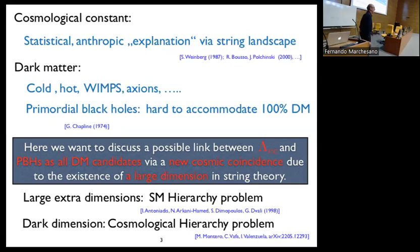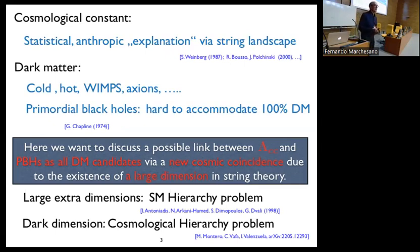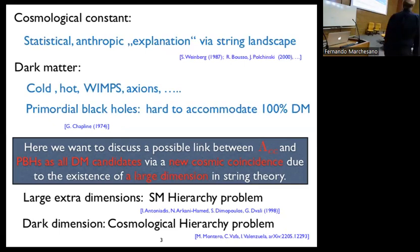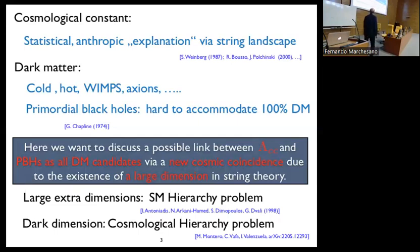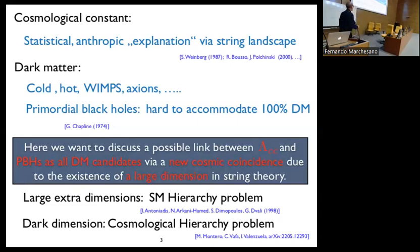As I will explain, this could be due to the existence of large dimensions in string theory. Large dimensions have occurred already in the past, in particular to explain the hierarchy problem — namely to explain the TeV scale of the standard model — but here there's a shift: large dimensions will now be used in the framework of the dark dimension in order to explain the cosmological hierarchy problem. This is basically the proposal by Montero, Vafa and Valentino made in May this year.